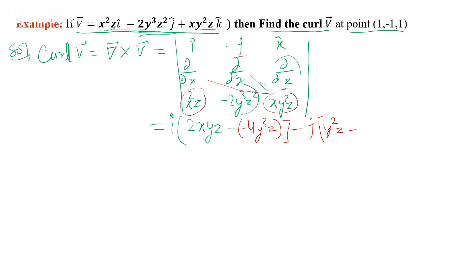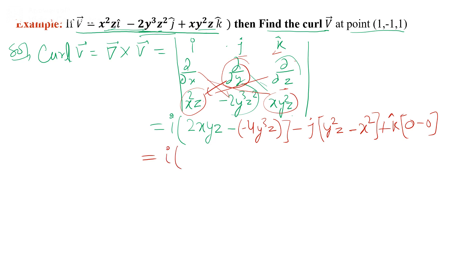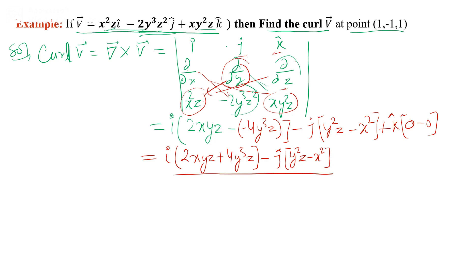Expanding the determinant: the i component is ∂/∂y(xy²z) − ∂/∂z(2y³z²) = 2xyz − 4y³z. The j component is ∂/∂x(xy²z) − ∂/∂z(x²z) = y²z − x². The k component is ∂/∂y(x²z) − ∂/∂x(2y³z²) = 0 − 0 = 0. So curl v = i(2xyz − 4y³z) − j(y²z − x²), which is the curl of the vector function.